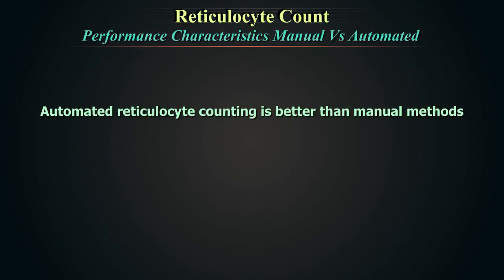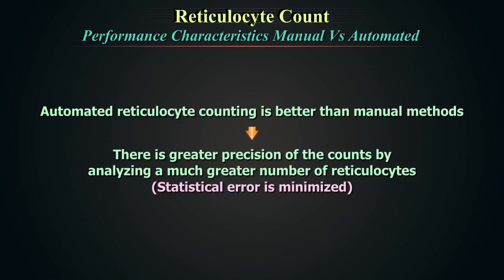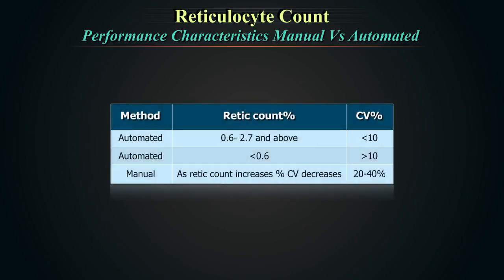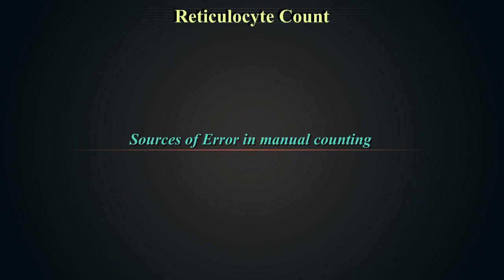Automated reticulocyte counting is better than manual methods due to greater precision. By analyzing a much greater number of reticulocytes, the statistical error is minimized. When reticulocyte percentages are between 0.6% and 2.7%, many studies have yielded a CV of less than 10% for automated counting, with a higher CV for counts lower than 0.2%. Visual microscopy has a CV ranging from 20% to 40%.